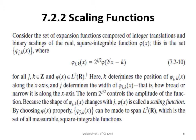Let us say we have a function φ(x) which has real values and is a square integrable function. We will also have a set of expansion functions composed of integer translations and binary scalings of φ(x). This expansion function is called φ(j,k,x) and can be written as φ(j,k,x) = 2^(j/2) φ(2^j x − k), where k belongs to Z and φ(x) belongs to L²(R).